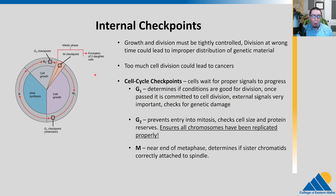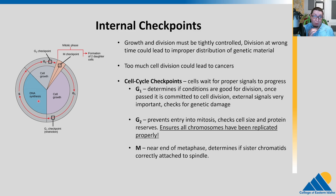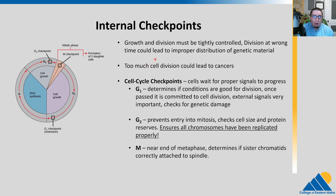There are three primary checkpoints for the cell cycle, and those happen at G1, G2 going into M phase, and near the end of metaphase. We need to control growth and division. Division at the wrong time could lead to improper distribution of the genetic material — if we haven't duplicated the genome, we can't split it properly. That M checkpoint is super critical because that's when everything's attached and ready to be pulled apart. Also, too much cell division could lead to cancer — cancer is overproduction of cell division.